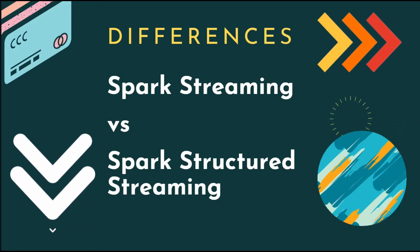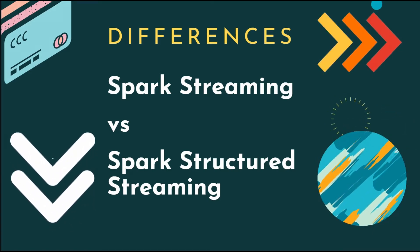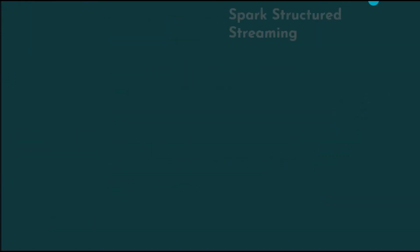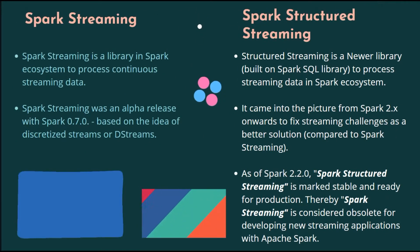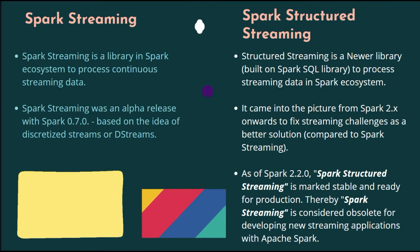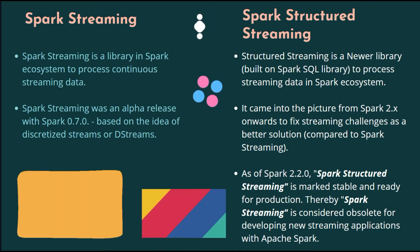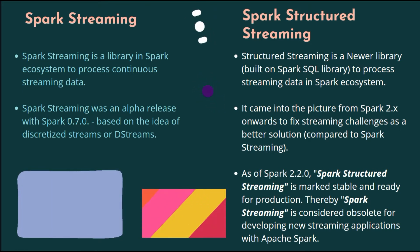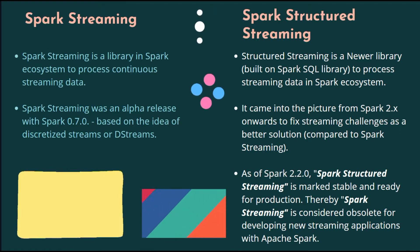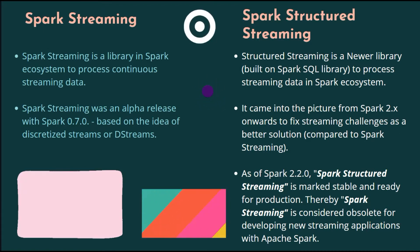In this video, we are going to see the difference between Spark Streaming and Spark Structured Streaming. Spark Streaming is a library in the Spark ecosystem to process continuous streaming data. It was an alpha release with Spark 0.7.0, based on the idea of discretized streams or DStreams.